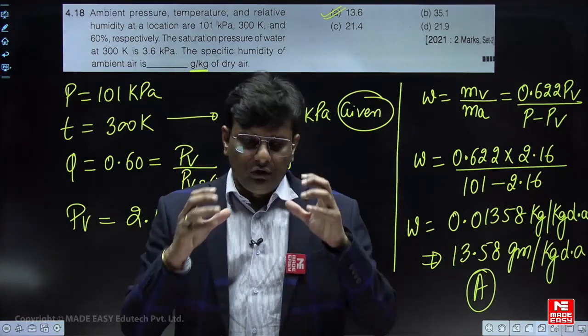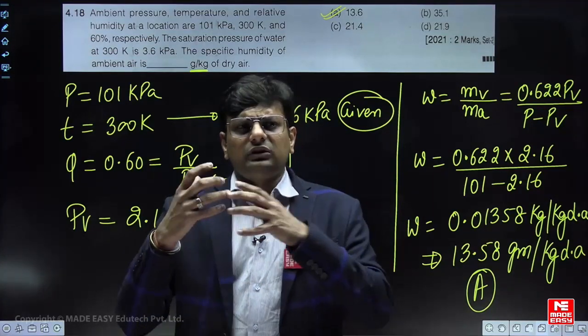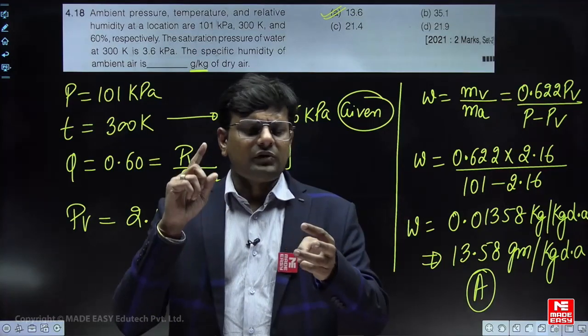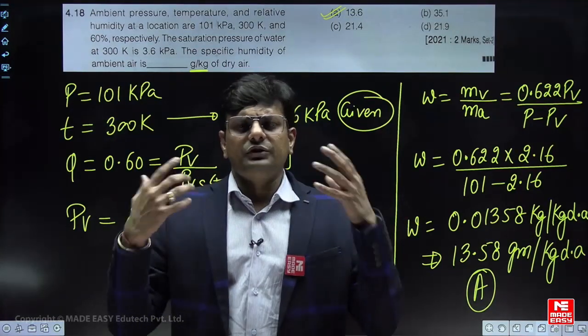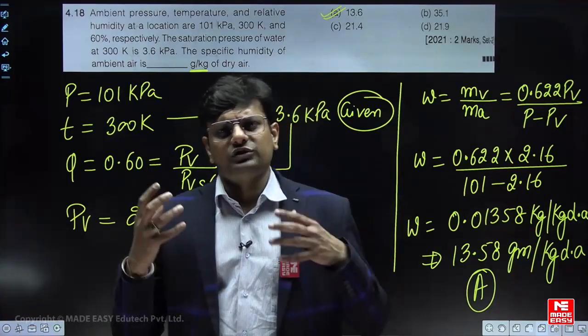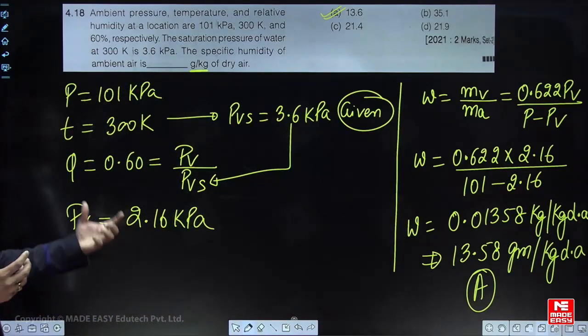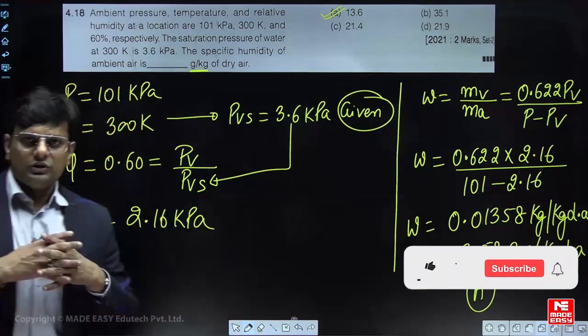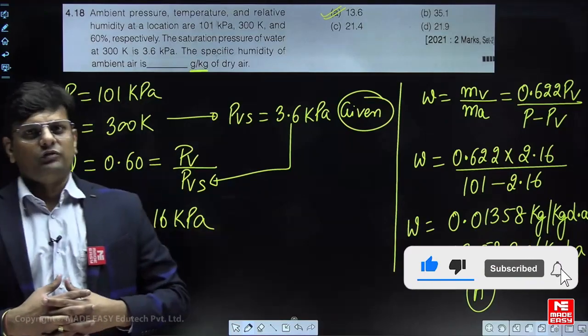You have to find out the value of partial pressure of water vapor. If you are able to find out the value of partial pressure of water vapor, there are three or four parameters: specific humidity, relative humidity, degree of saturation, enthalpy of moisture, or you can use the Apjohn formula to calculate the partial pressure of water vapor, known as PV. So the answer for this question is option number A, 13.6. Best of luck for your exam.